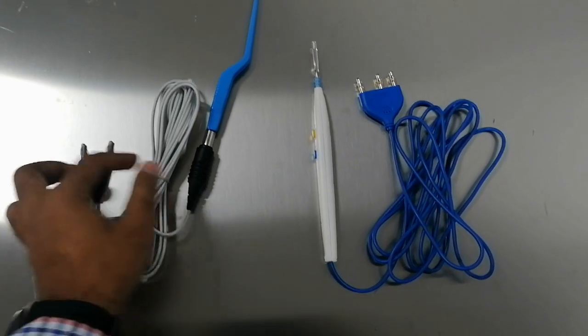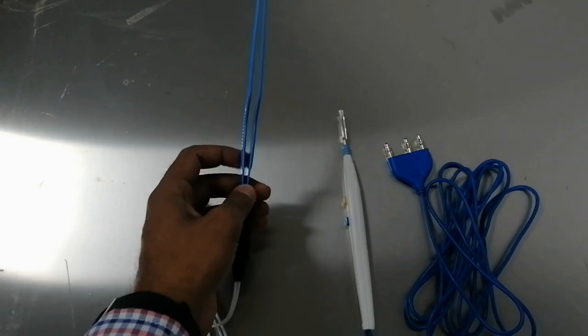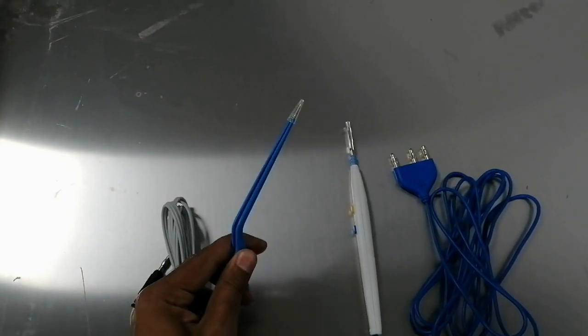Active electrode. This is the surgical instrument that delivers the electrical energy to the tissue being treated. It is usually a pencil-shaped tool with a metal tip that is insulated except at the tip.